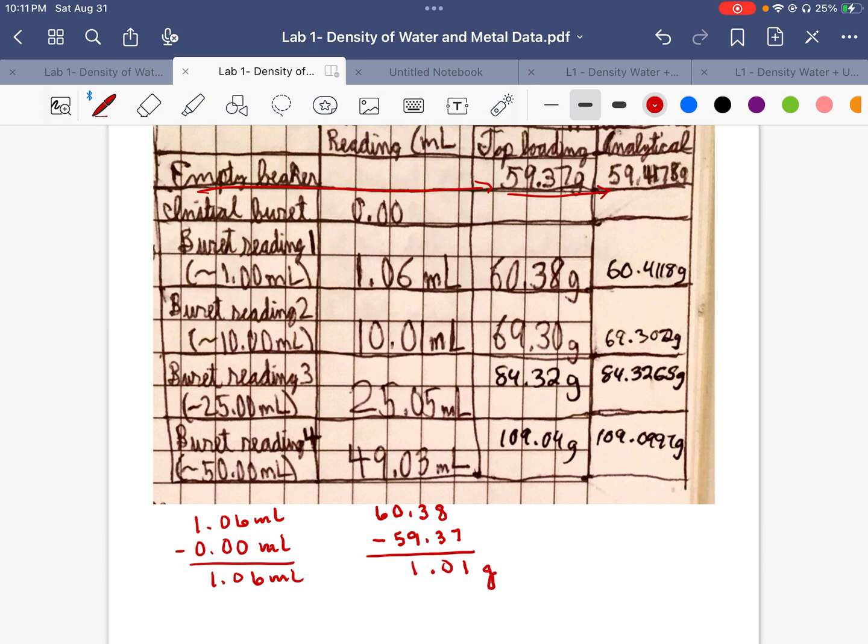And you're going to do the same for the analytical balance, where you subtract the empty beaker from the beaker plus water. And you're going to keep doing that, where you take the empty beaker and subtract it from the next one. Take the empty beaker, subtract it from the next one. And that's what you're going to plug in to that table. And you're going to continue that for the top loading and the analytical.